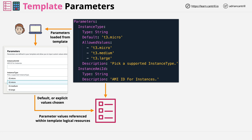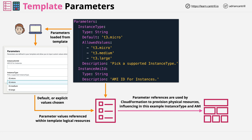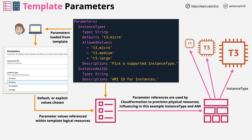At this stage we enter values, or accept the default values, and move through the process of creating the stack. Conceptually, the template defines things based on the resources declared within it and the interactive values provided via the parameters. Both of these are combined and used to create the stack, which creates physical resources based on the logical resources and the effect on them which the parameters have. In this case, based on the parameter values, we would create an instance with one of three sizes and use a certain Amazon Machine Image.